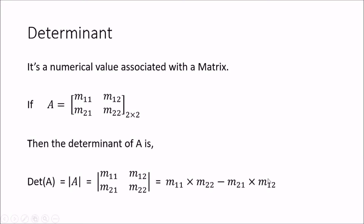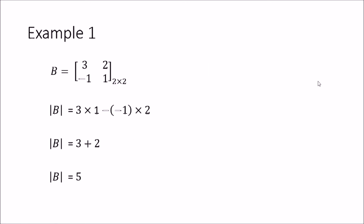This is how you find the determinant of a 2 by 2 matrix. Let's look at an example. We have matrix B equals 3, 2, minus 1, 1. We take the multiplication of the principal diagonal, 3 into 1, and deduct the multiplication of the sub-diagonal, that is minus 1 into 2. You get 3 minus minus 2, which becomes 3 plus 2, and the determinant of this matrix is equal to 5.